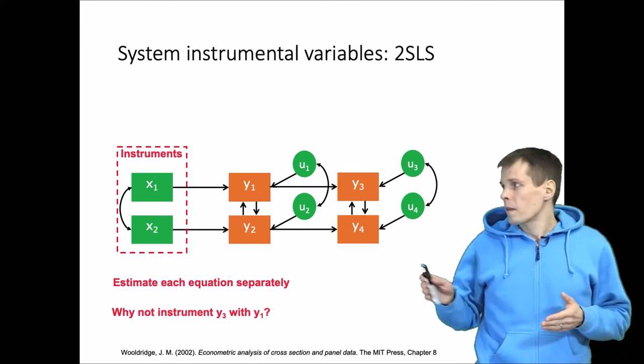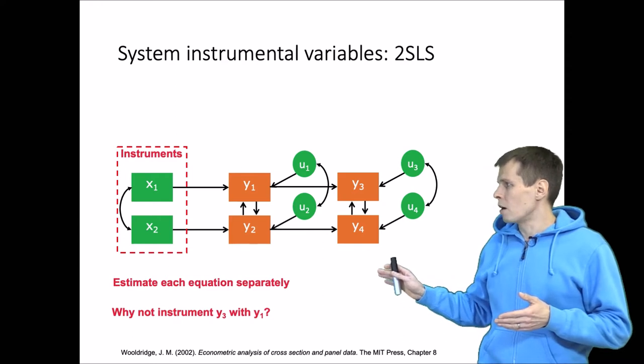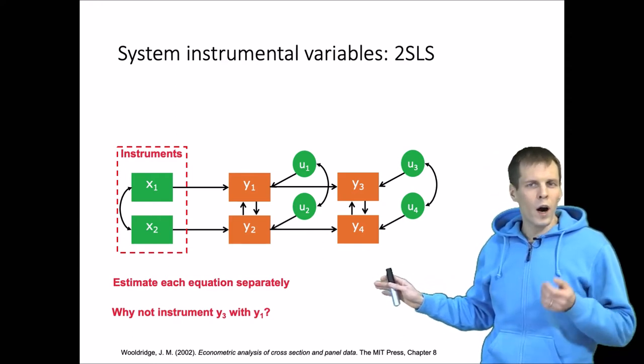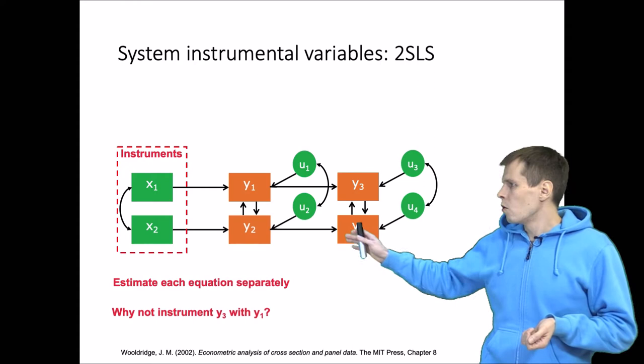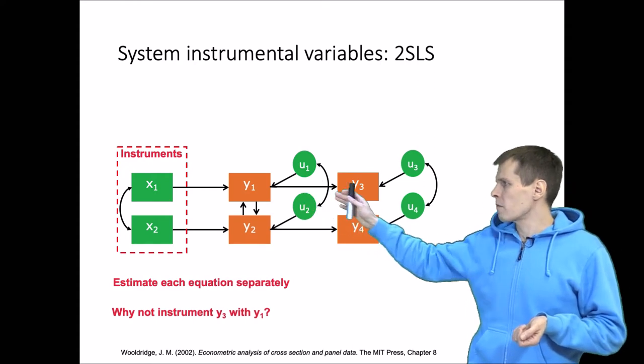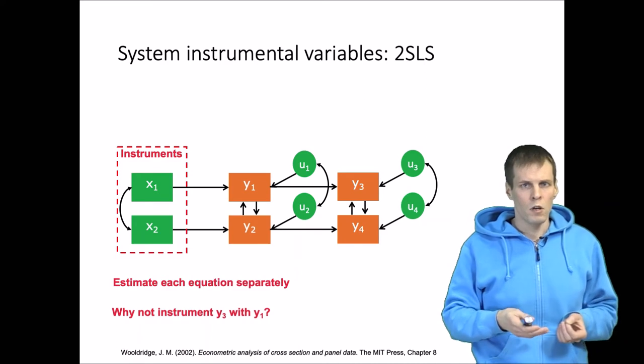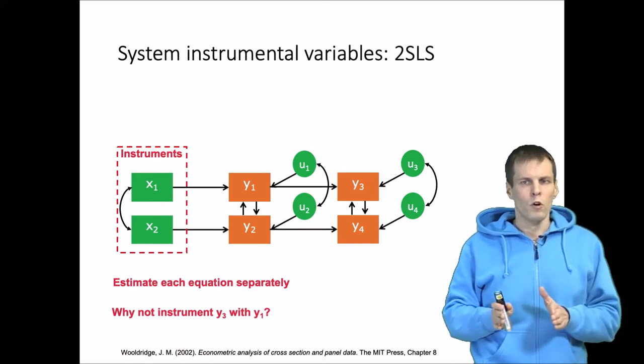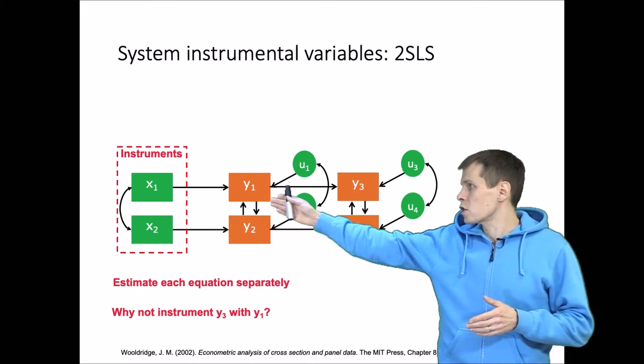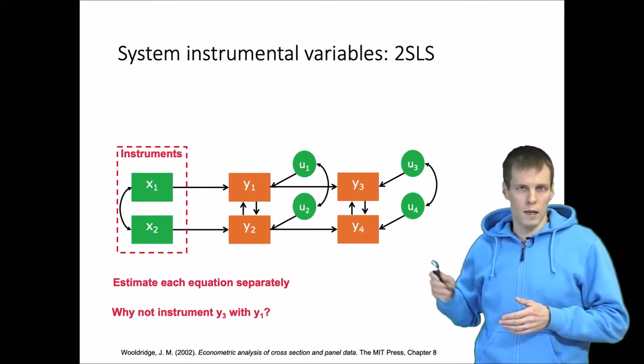Now one question that may come to mind is why are we not using y1 as an instrument for y3? Because when we establish the model of identification using the block recursive rule, we note that y1 is an instrument for y3 and therefore the model is identified.